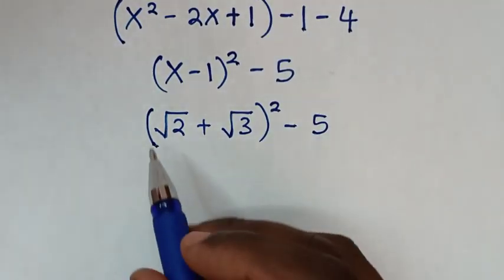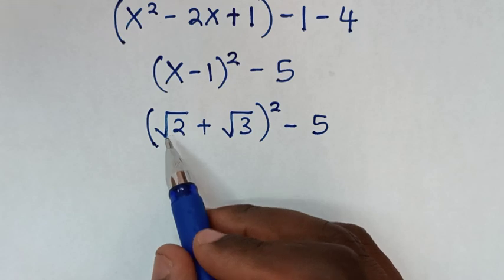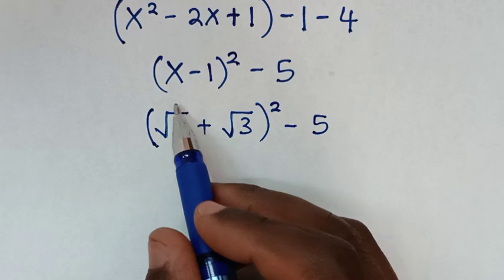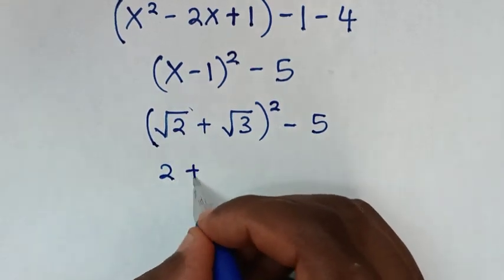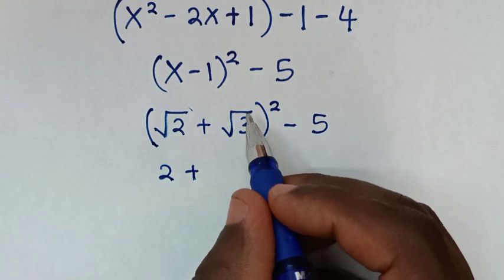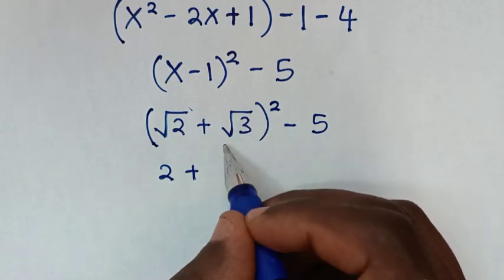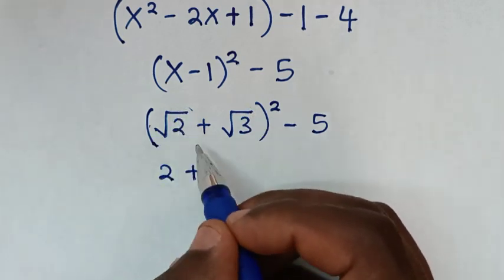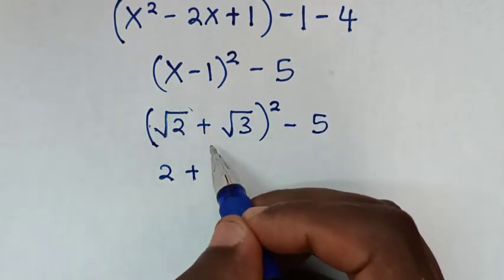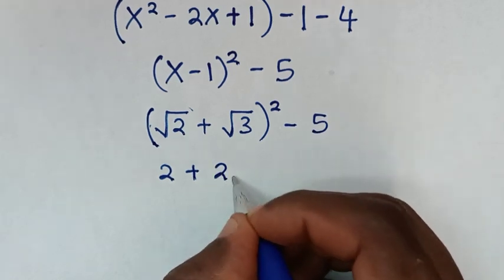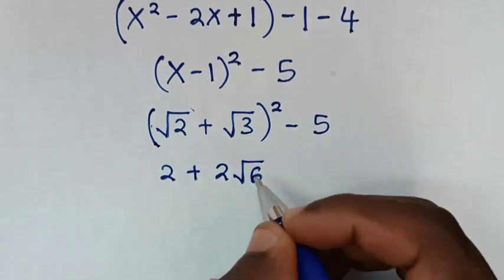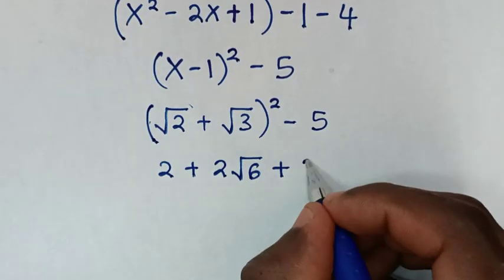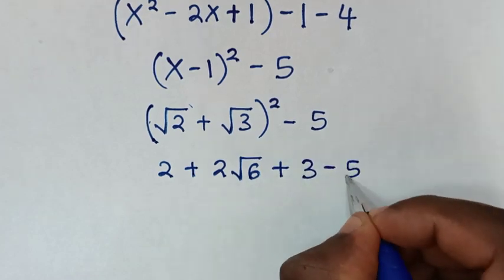Expanding (√2 + √3)²: √2 × √2 = 2, then √2 × √3 = √6, and √3 × √2 = √6, so √6 + √6 = 2√6. Finally, √3 × √3 = 3. So we get 2 + 2√6 + 3, then minus 5.